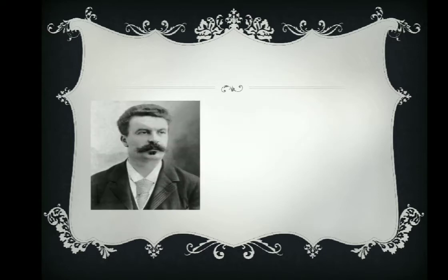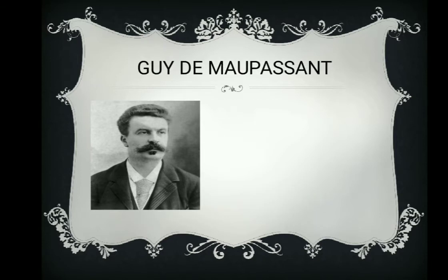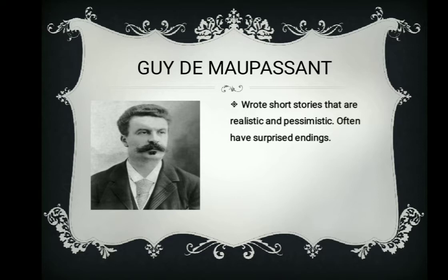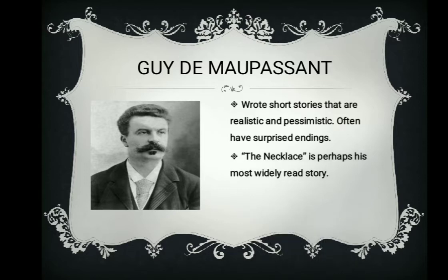Moving on, let's talk about the author, Guy de Maupassant. He was a writer of that period who was quite realistic and pessimistic — he wanted to write only about real things. He has written many short stories based on a realistic and pessimistic approach, and his stories always have surprising endings. The Necklace is perhaps his most widely read story.